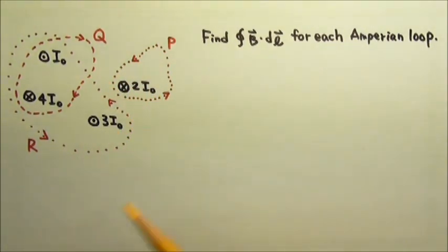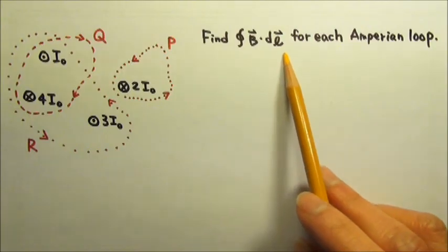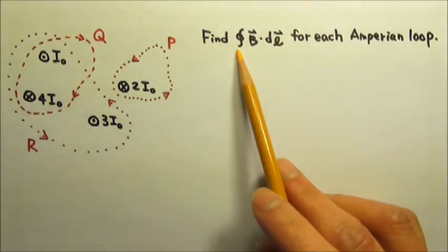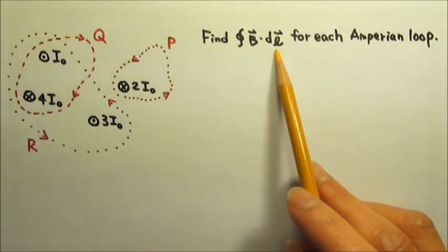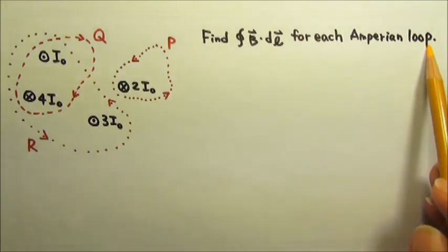Now please find the value of the magnetic circulation, the closed integral of B·dl, for each of the three Amperian loops.